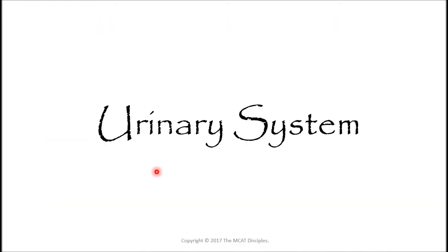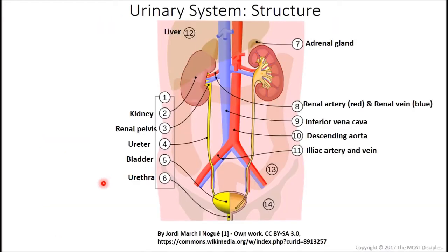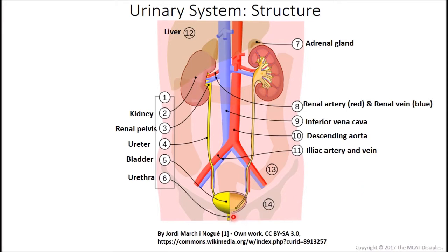The urinary system. Here in this figure we are showing the urinary system and a few surrounding organs. You'll notice the kidneys — we have two of them, positioned more towards the back, more dorsally as opposed to ventrally. Coming off from the kidneys, draining them, there are two structures called the ureters. Those will flow into a dome-shaped structure called the bladder.